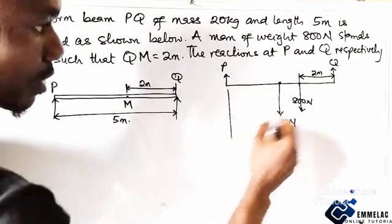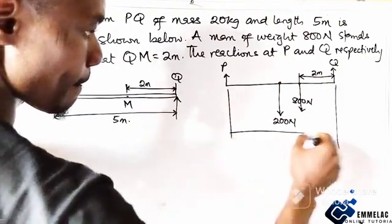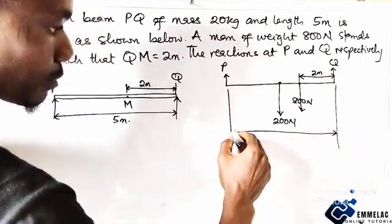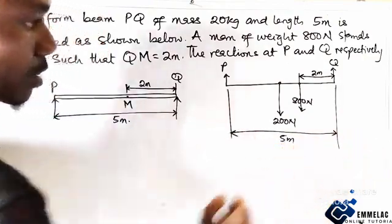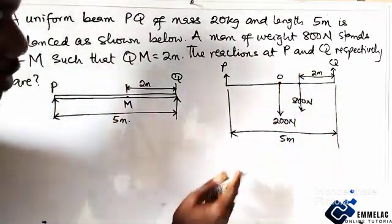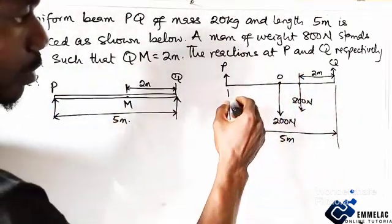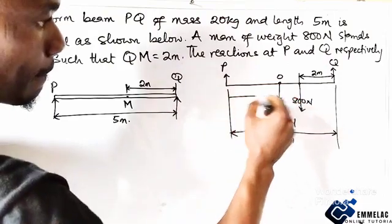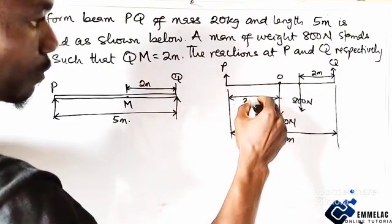Let me have a better diagram. This is 5 meter. Now here is the center. Let's call it O. Which means from here to here will give us 2.5.